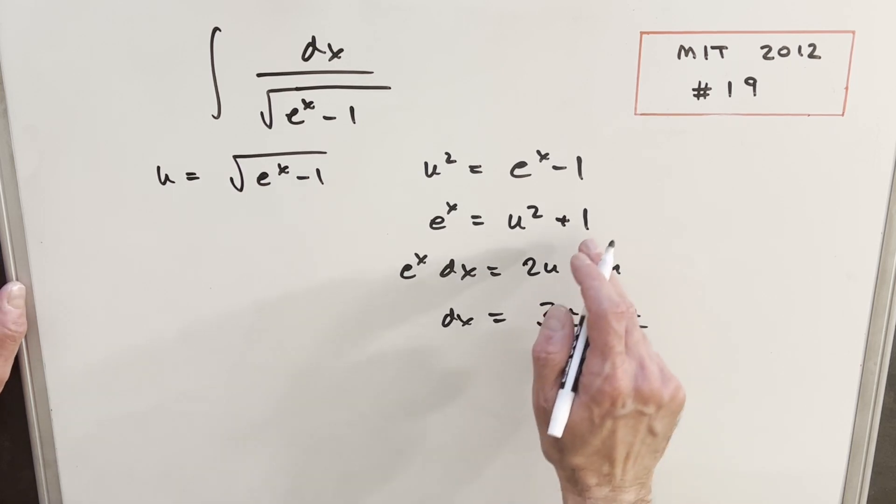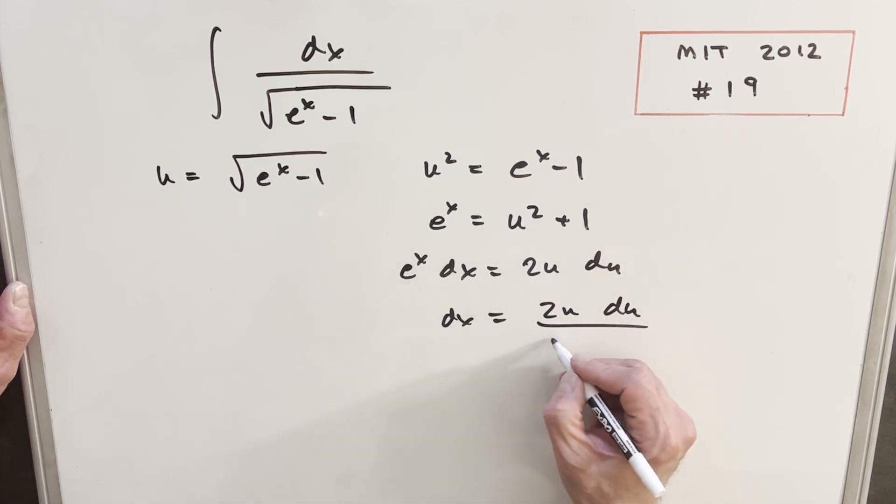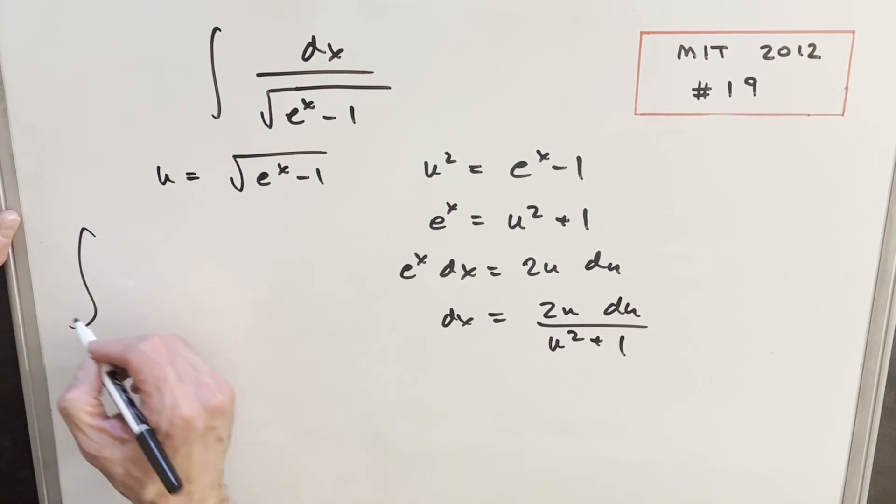We could have e to the x here, but we'll substitute that with our u squared plus 1 just to get everything in terms of u. And now I think we have what we need to make this substitution.